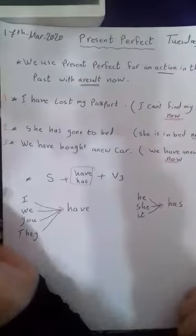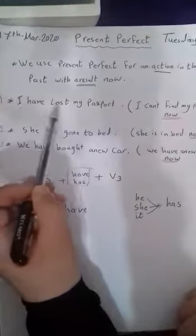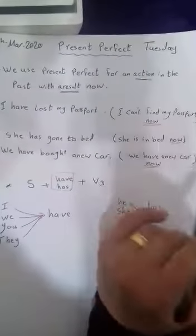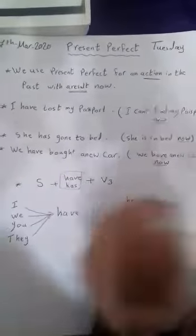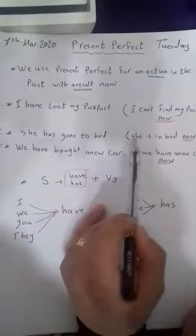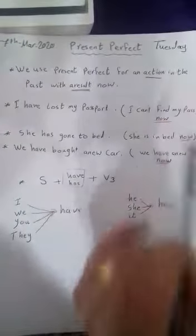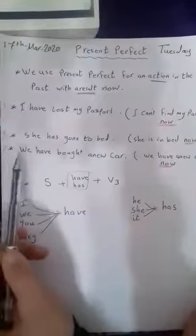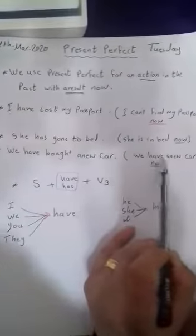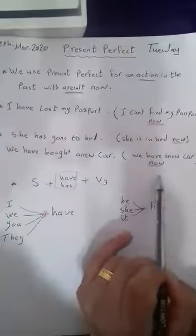When we talk about examples, look at this example. I have lost my passport. It means I can't find my passport now. Example two: She has gone to bed. It means she is in bed now. Example three: We have bought a new car. It means we have a new car now.